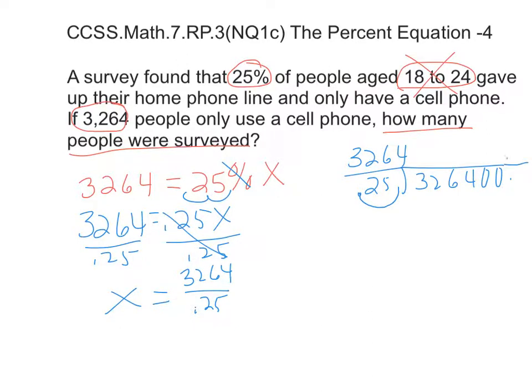The answer's going to be large, and it stands to reason that it would be large. So 25 goes into 3,264. I'm just going to multiply it out. It is 13,056.